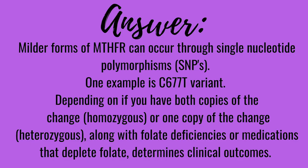There are also milder forms of the deficiency, which occur from what we call SNPs — single nucleotide polymorphisms. These are small mutations that occur in the MTHFR gene that cause just a mild effect, sometimes a little bit more. One commonly known variant is the C677T mutation, where 677 denotes the position where that mutation occurs. Since you carry two copies of the gene, if both copies are defective, you are homozygote, and that causes a larger decrease in enzyme function.